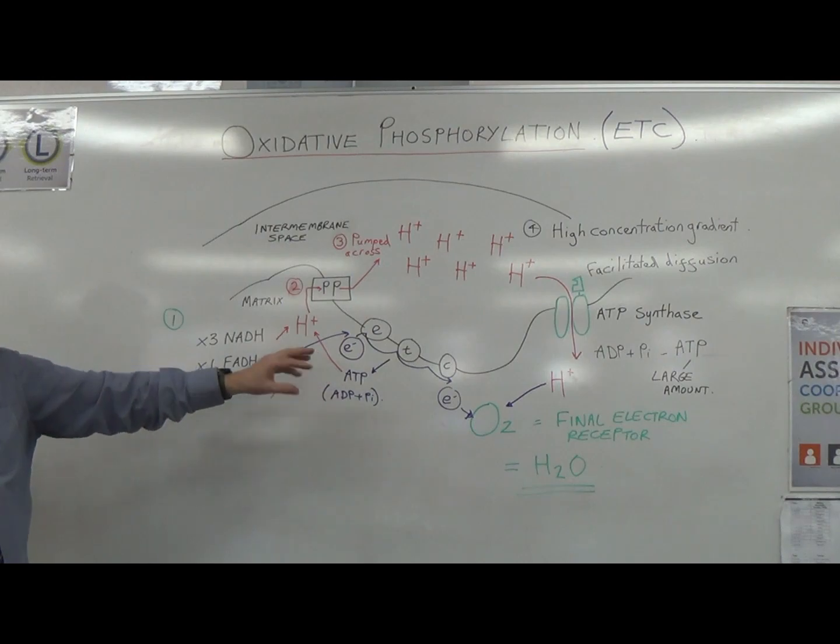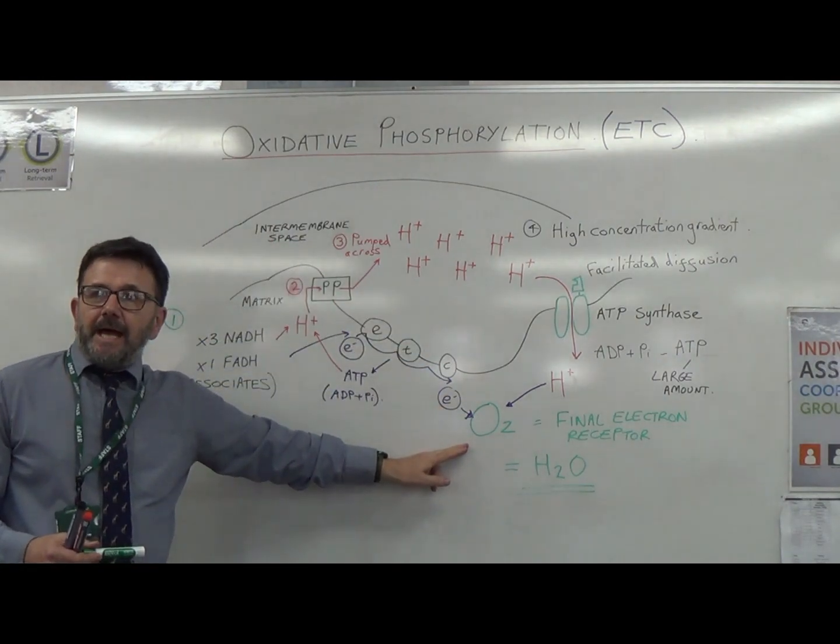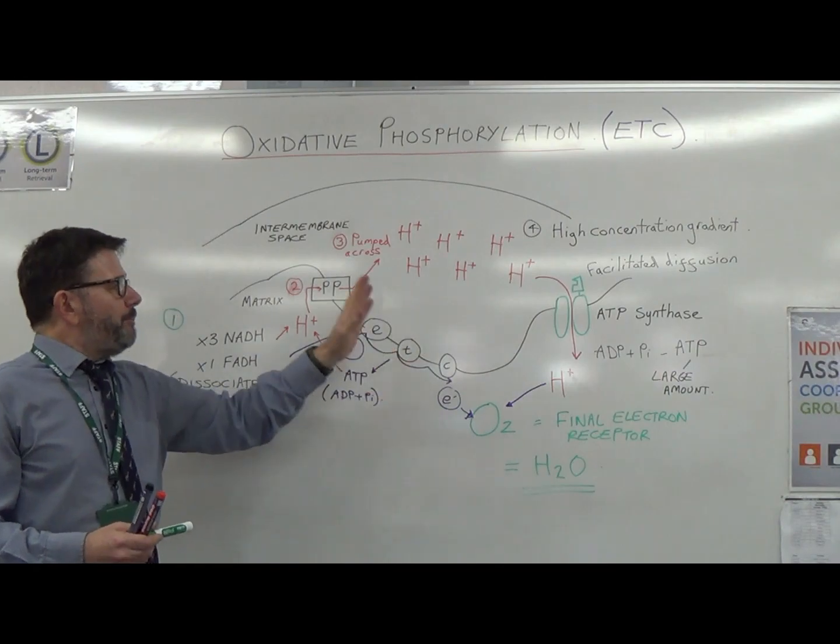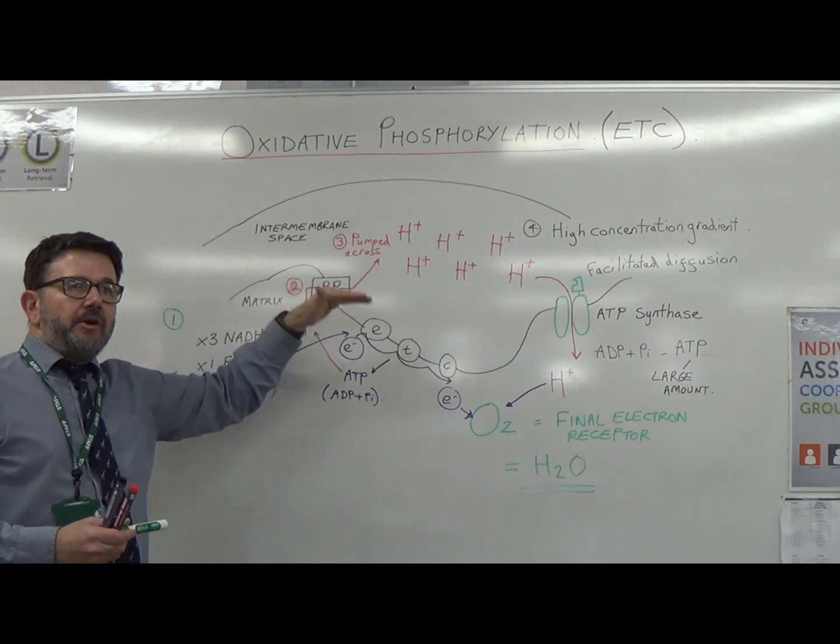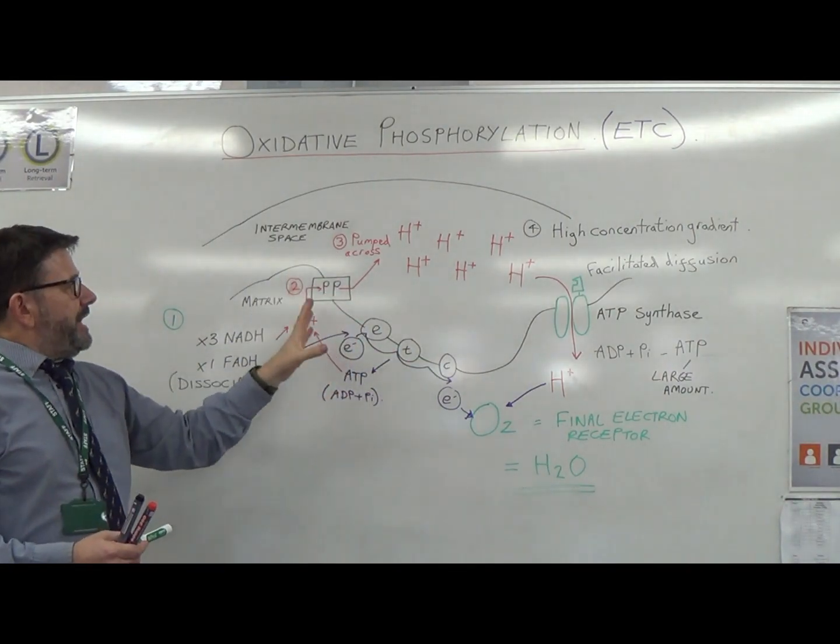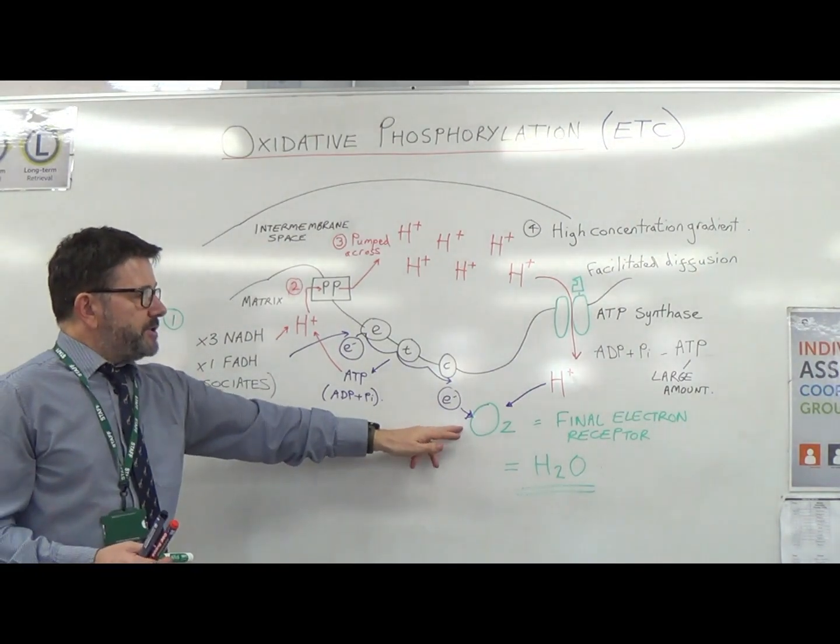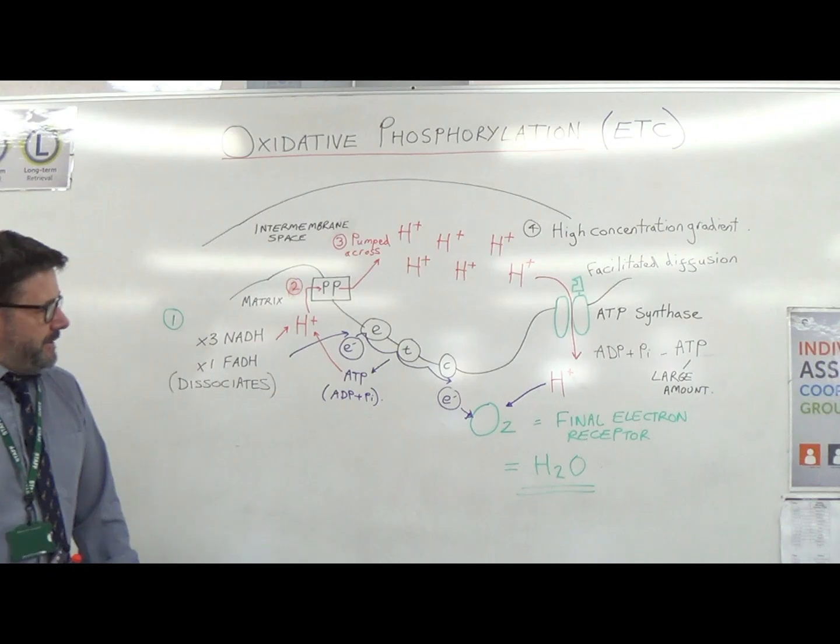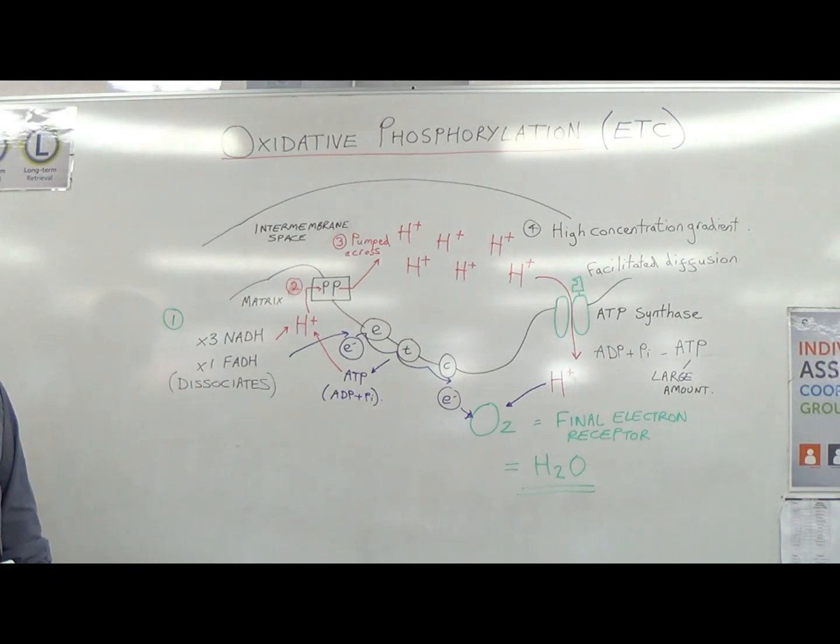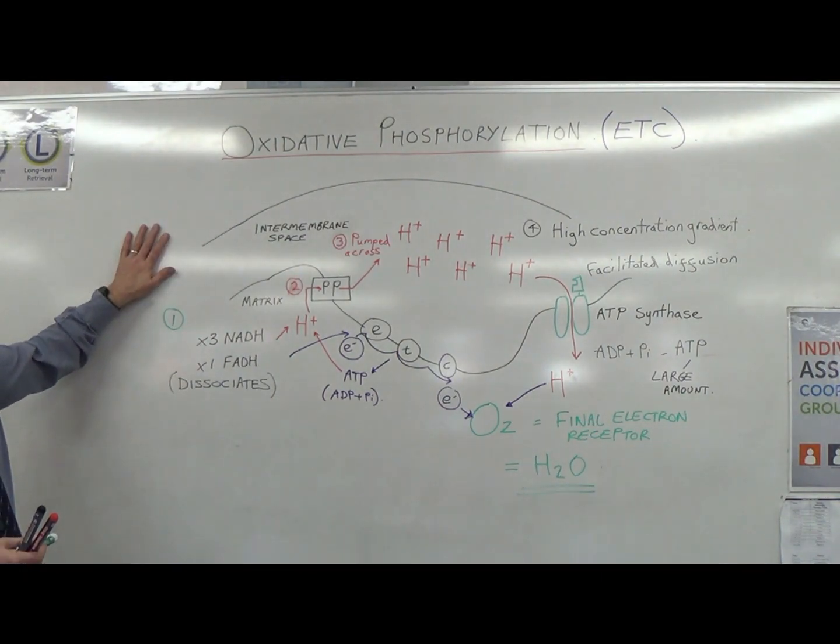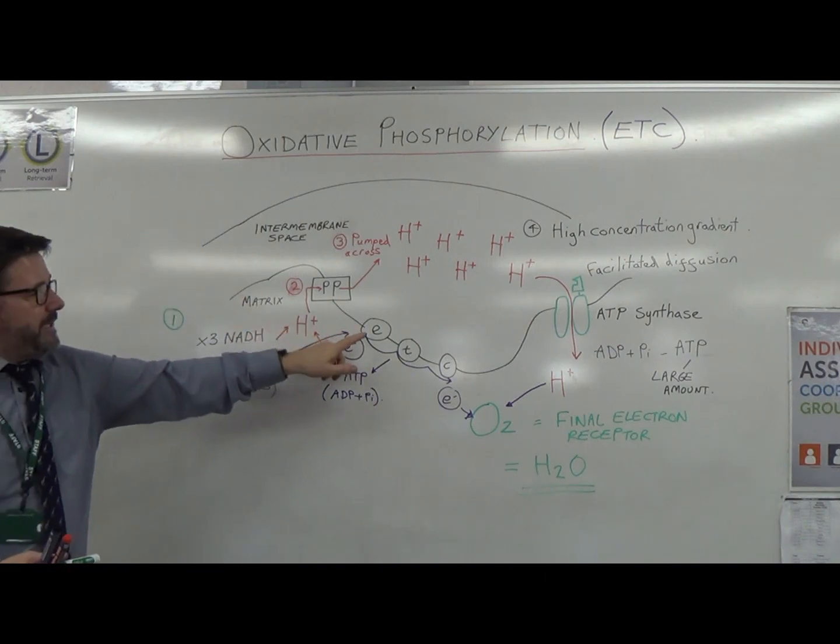Obviously the Krebs cycle continues to bring hydrogen ions and electrons. If you don't have oxygen there, it will all back up, you won't get any concentration gradients, and therefore respiration stops very quickly. So without that oxygen receptor, you won't have ATP being produced, and that is what we call oxidative phosphorylation related to the ETC.